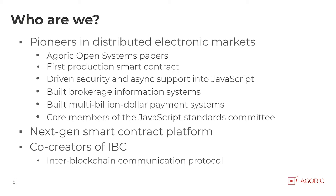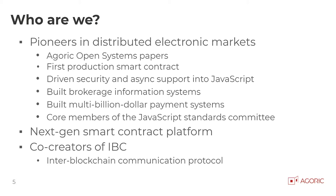A little bit of background on Agoric. Agoric was founded by pioneers in distributed transactions and distributed systems. I worked on the first production smart contract back in 1989, long before blockchain. Mark Miller, our chief scientist, wrote the Agoric Open Systems Papers in 1988 that really articulated software agents building and participating in markets. We're building a next-generation platform for smart contracts for both public chains and private and consortium chains, allowing the millions of developers familiar with JavaScript to safely write composable smart contracts.